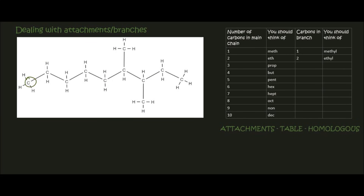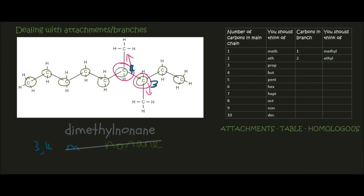Looking at this one, the longest carbon chain is nine carbons, so that's non. Because it's single bonds and just an alkane, we end it as nonane. The attachments are here and here — we label from the right side so the attachment numbers are as low as possible. We have attachments on carbon number three and carbon number four. Each of those attachments is a methyl, so the name is 3,4-dimethylnonane.